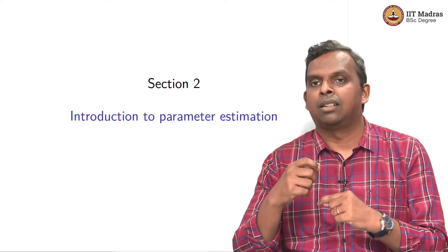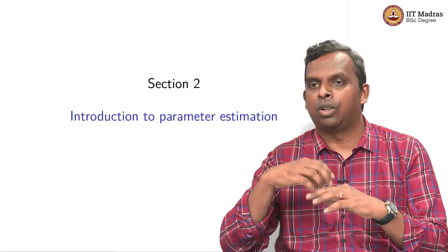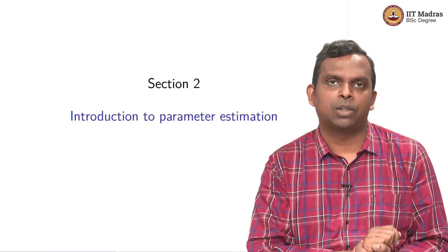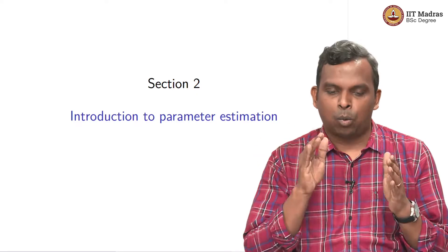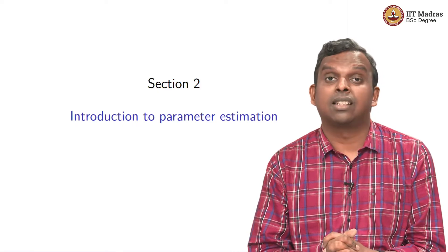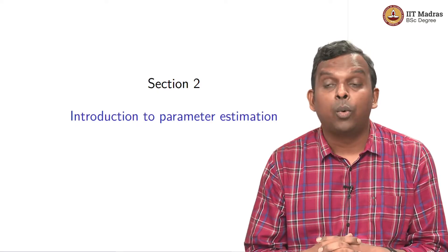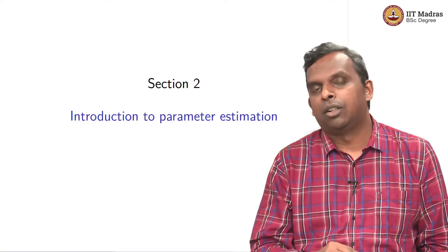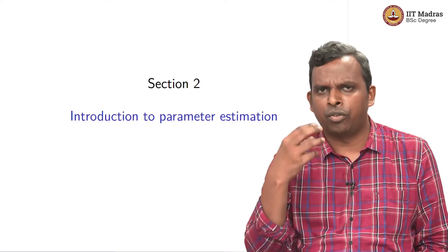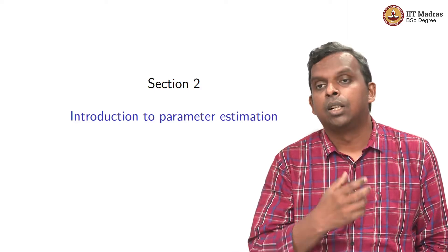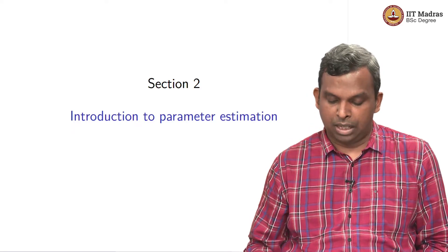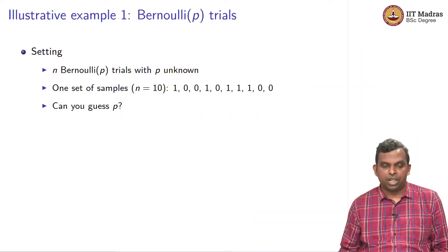You have to find a parameter — your model is parameterized by something and you have to find that parameter. This is very typical, and what we will see in the next few lectures is: given a problem like that, how do you go about finding a parameter from samples? We have already seen that IID samples contain a lot of information about the underlying distribution. If there is a missing parameter, how do you find it? That is the problem of parameter estimation.